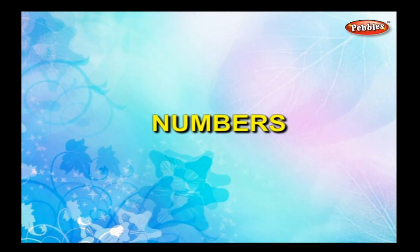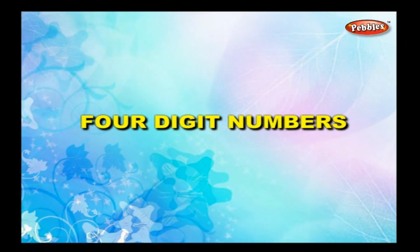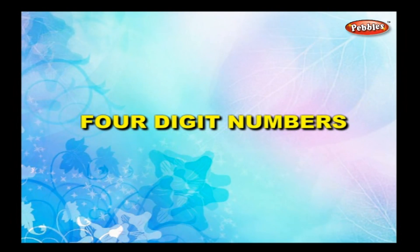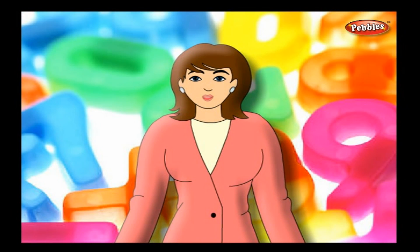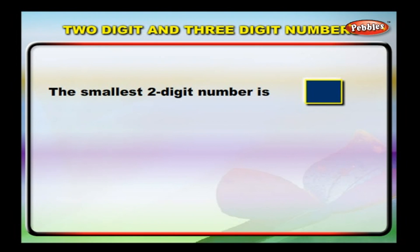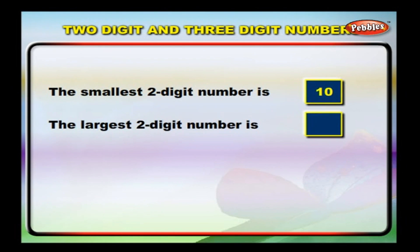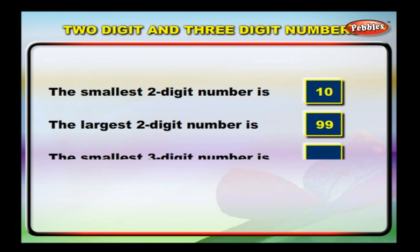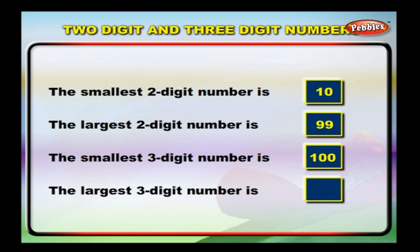Four-Digit Numbers. In our previous classes, we have learned about two-digit and three-digit numbers. We know that the smallest two-digit number is 10 and the largest two-digit number is 99. The smallest three-digit number is 100 and the largest three-digit number is 999.